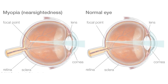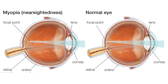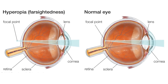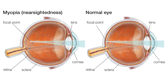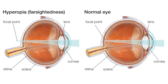Among the most common vision disorders are nearsightedness and farsightedness. Nearsighted people have difficulty seeing distant objects, while farsighted people have trouble seeing what is up close. These vision defects are almost always caused by the shape of the eyeball. For vision to be perfect, the eyeball must have a perfect spherical shape. However, in nearsighted people, the front-to-back diameter of the eyeballs is elongated, and in farsighted people, it is shortened.